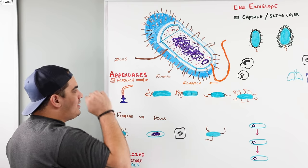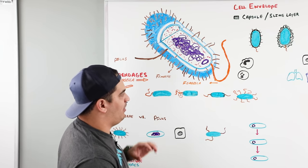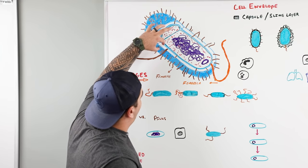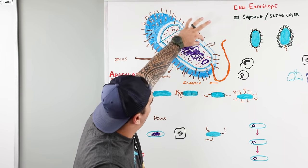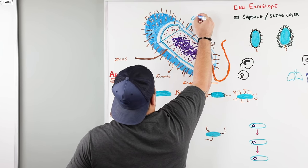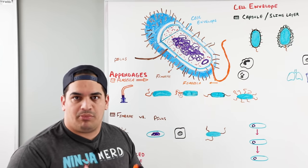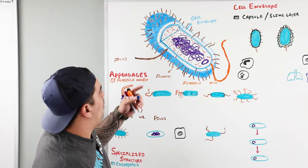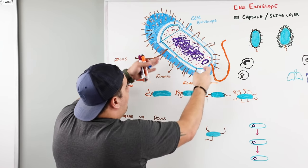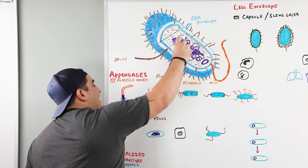Some bacteria have specialized structures inside called endospores - we'll discuss those shortly. The bacteria also has a big thick covering around it made up of multiple different components called the cell envelope. Inside the bacteria you'll notice a few different things as well.